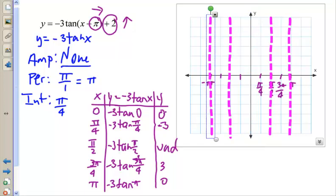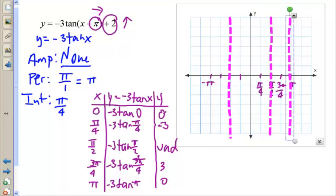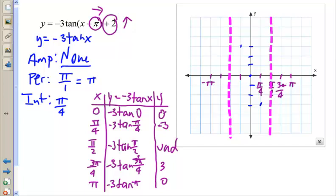So at 0, I'm at 0. At π/4, I'm at negative 3 — that's 1, 2, 3 units down. That means at negative π/4, I'm at positive 3. Here's my graph — just one period, because the whole graph is going to shift afterward.